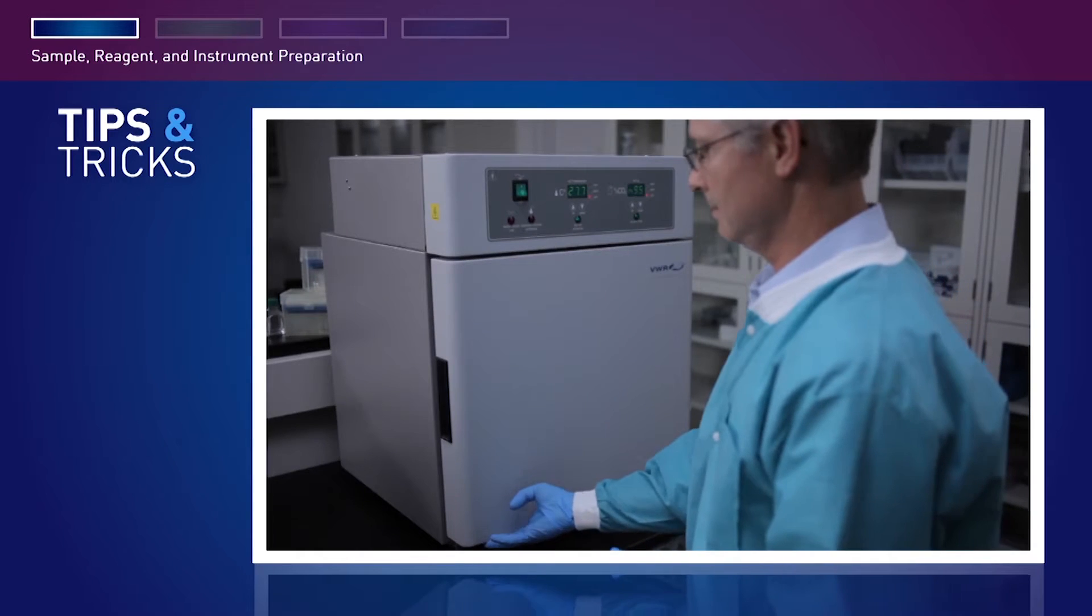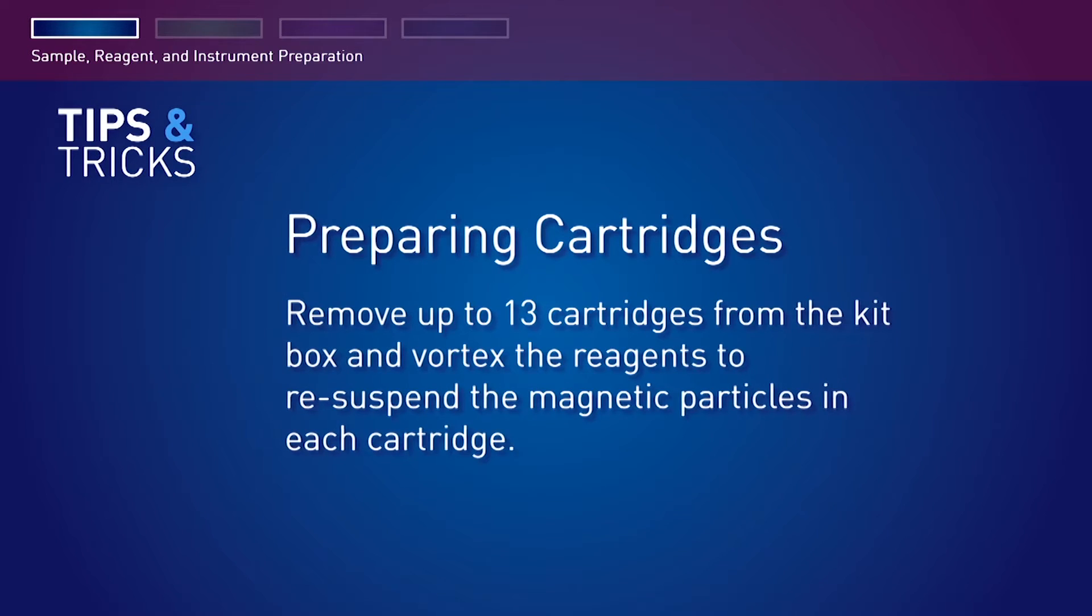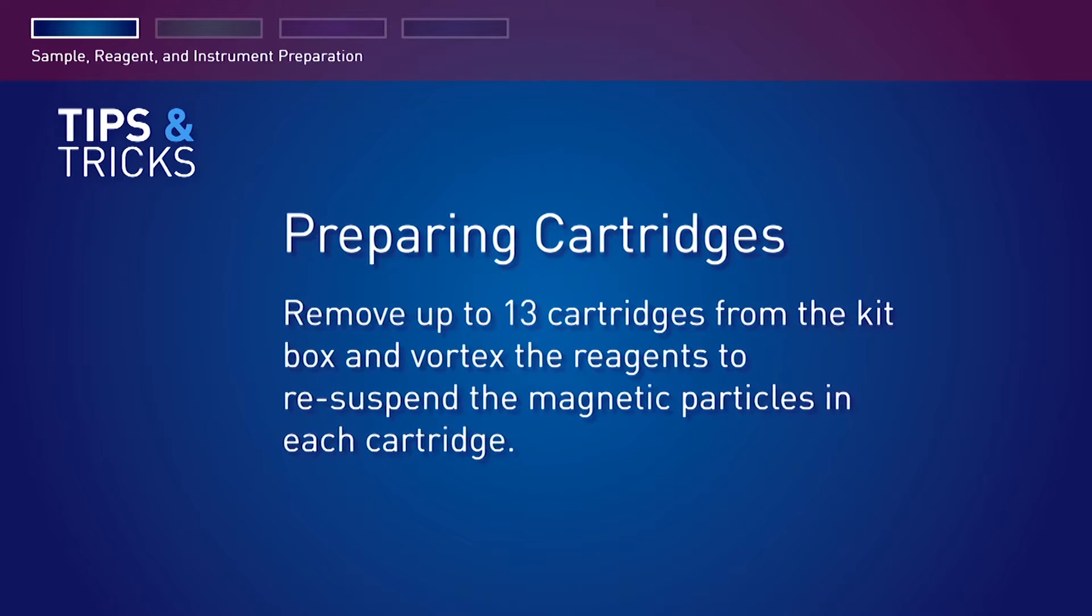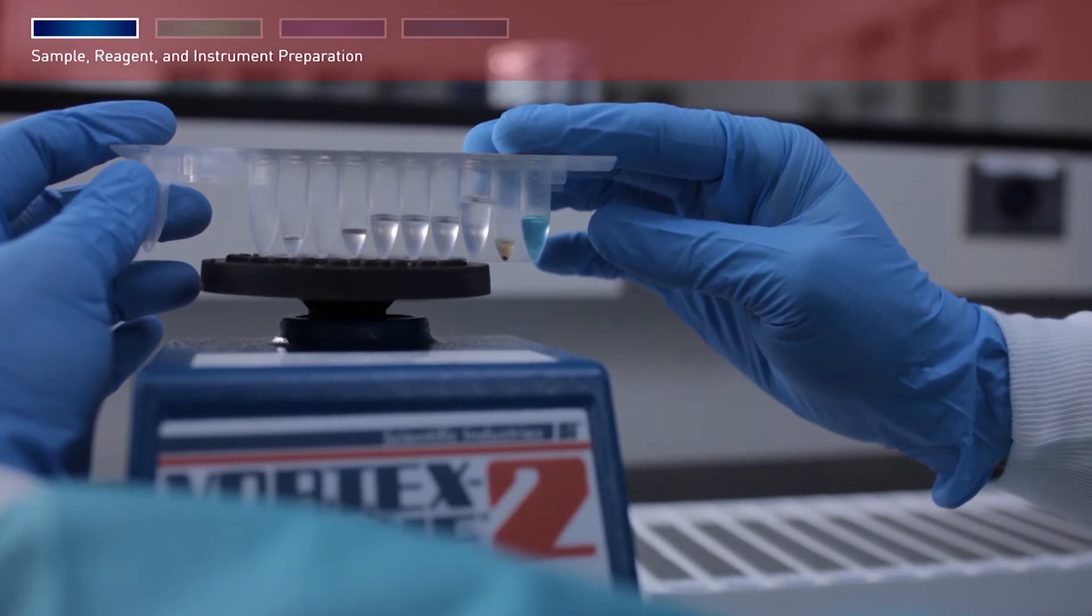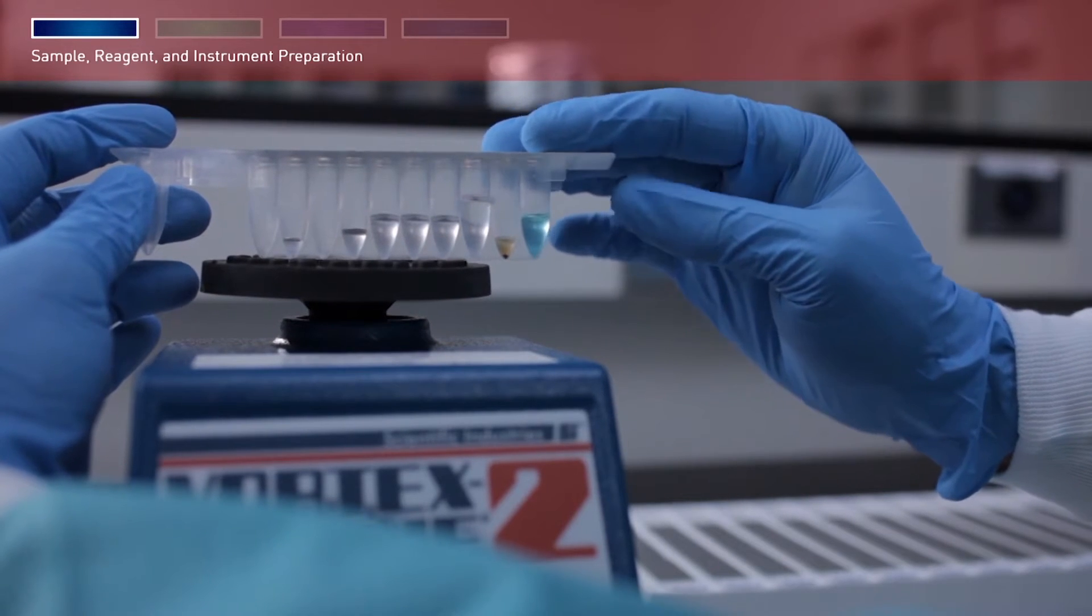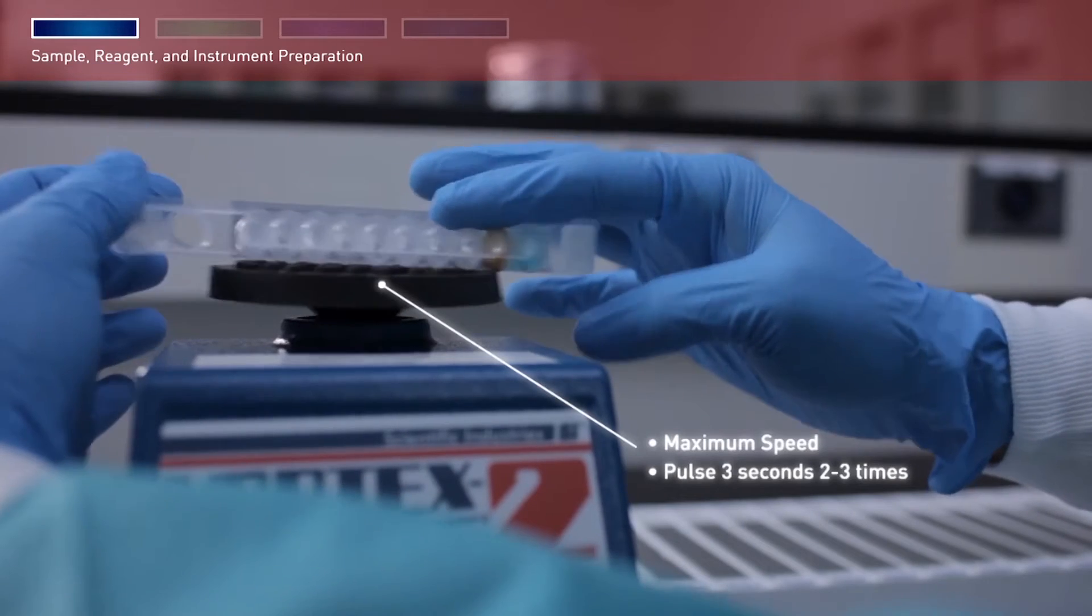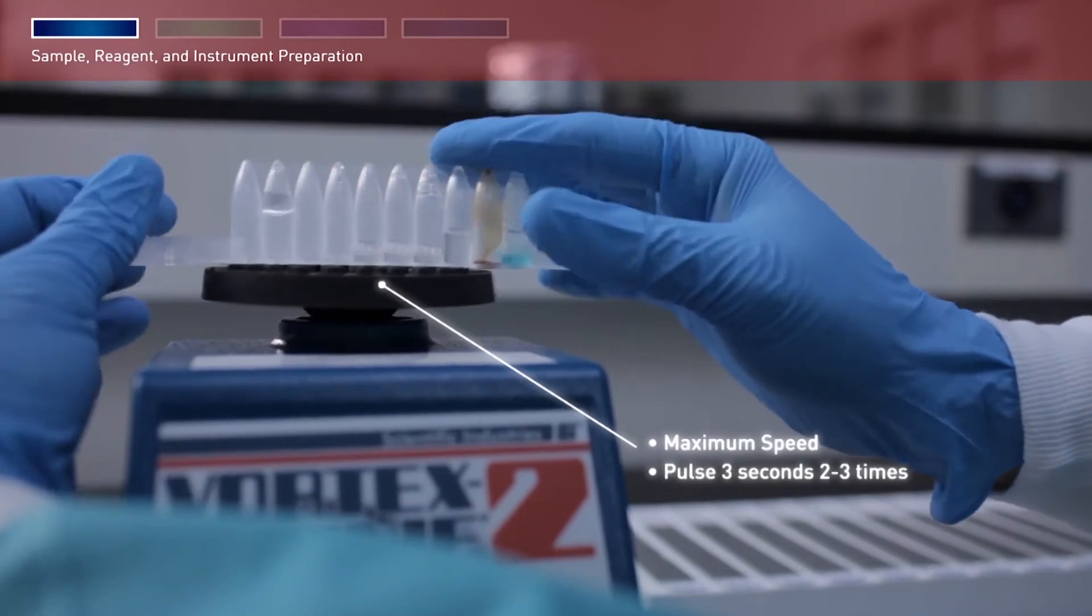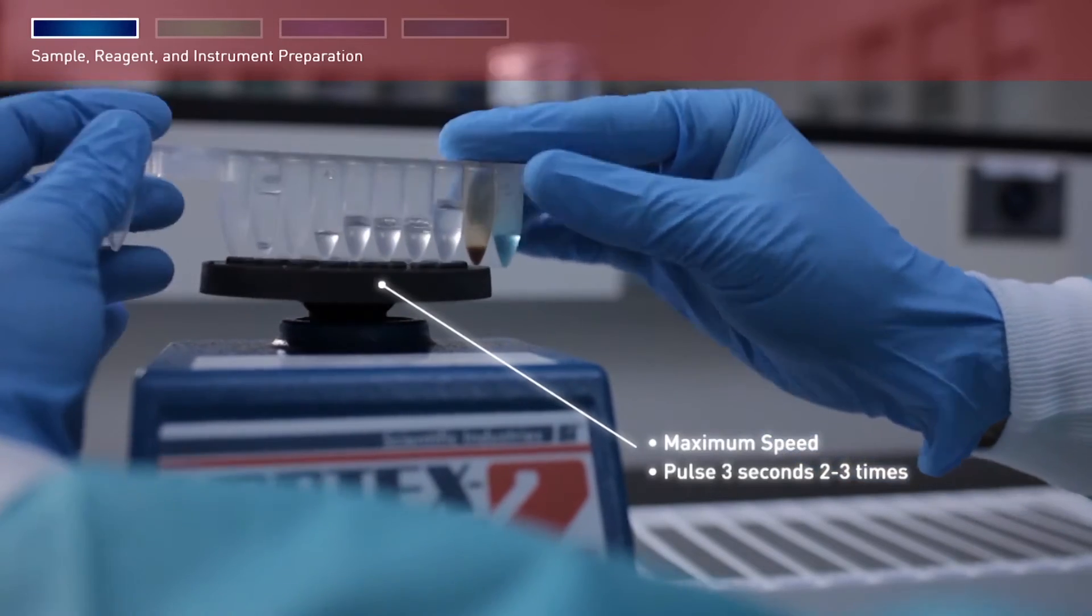Remove up to 13 cartridges from the kit box and vortex the reagents to resuspend the magnetic particles in each cartridge. Hold the cartridge foil side up on a vortexer set to maximum speed, then pulse approximately three seconds two to three times. Repeat this step with the cartridge foil side down, then repeat again with the cartridge on its side.